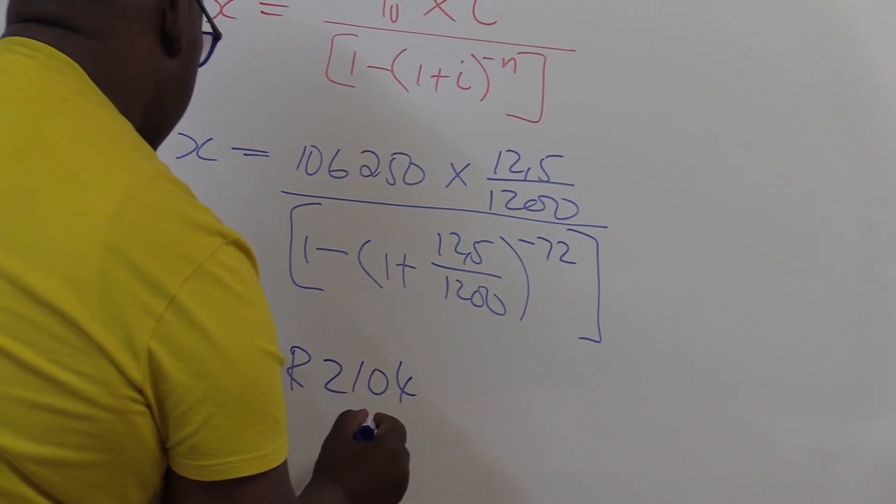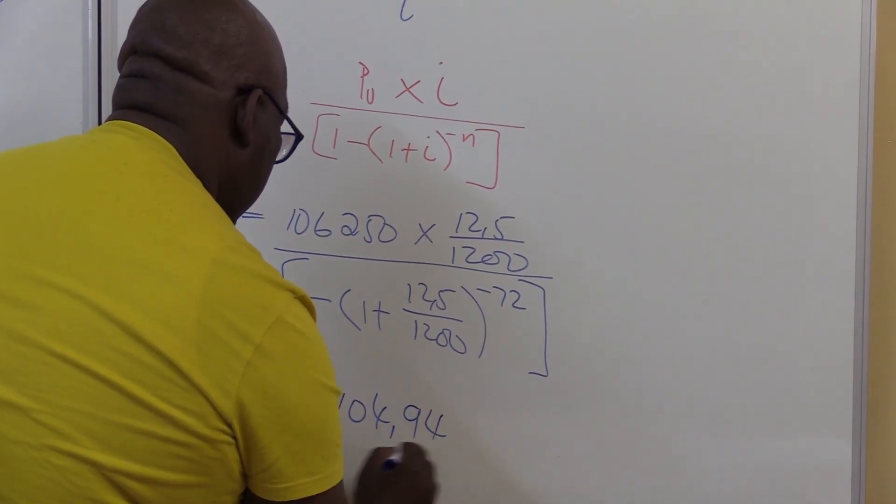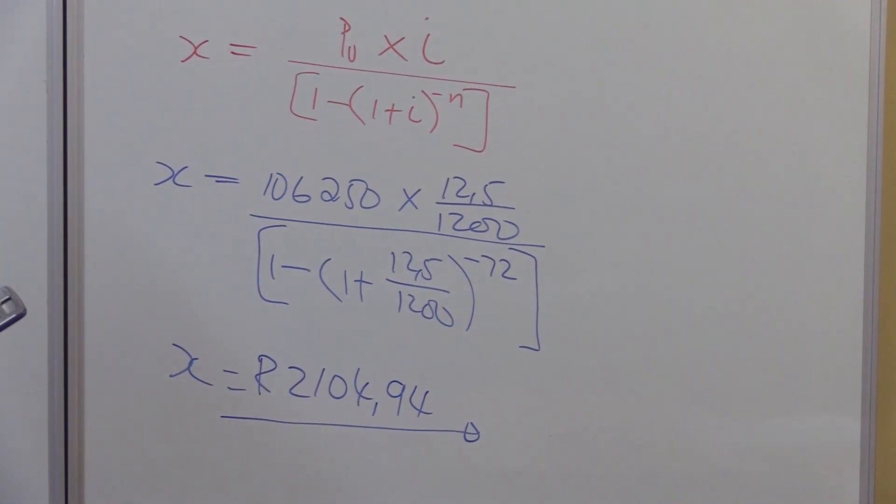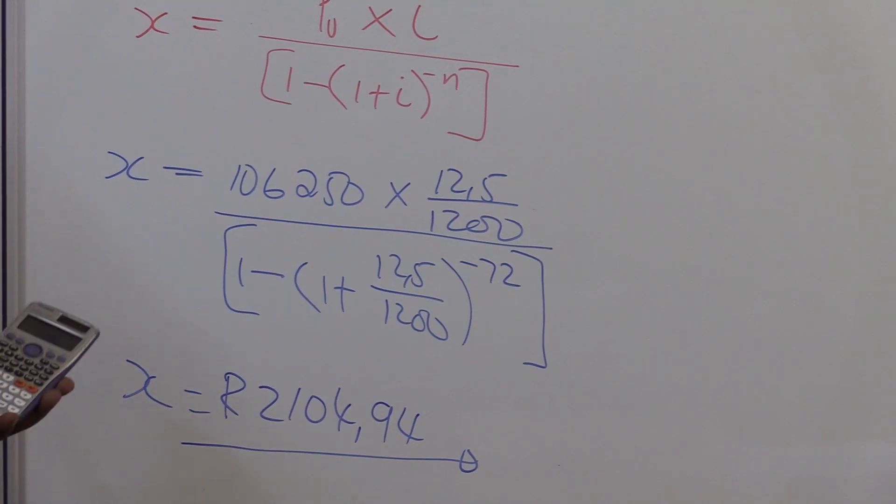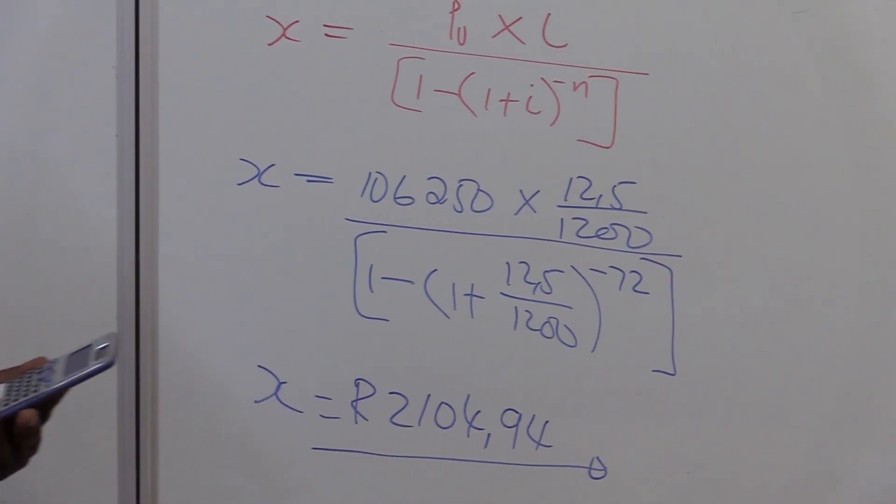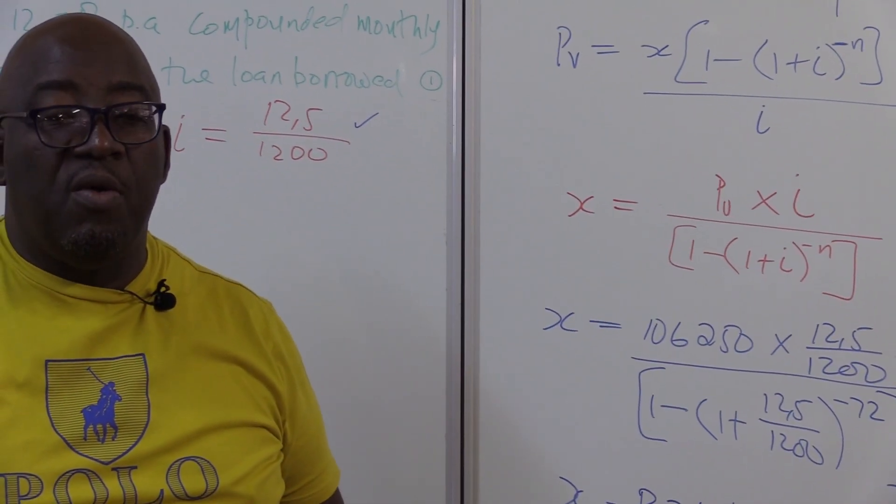It is 2,104, 2,493.7. So, it's going to be comma, 94. The installments that it needs to put to pay back the loan for 106,250 will be 2,194 cents. So, what is important here, you must be able to make X the subject of the formula in this way. Thank you.